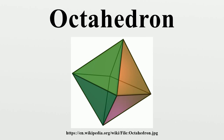The regular octahedron can also be considered a rectified tetrahedron, and can be called a tetra-tetrahedron. This can be shown by a two-color face model. With this coloring, the octahedron has tetrahedral symmetry. Compare this truncation sequence between a tetrahedron and its dual.